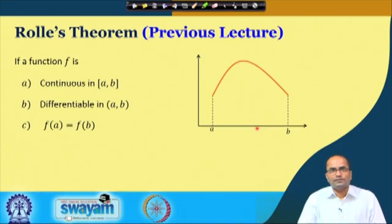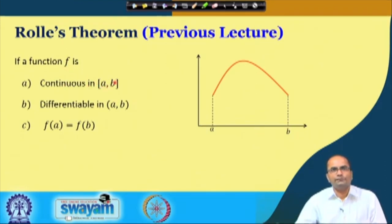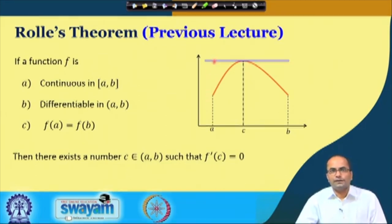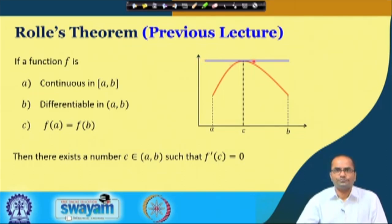Let me recall from the previous lecture. If a function is continuous in a closed interval and differentiable in an open interval, and the function values at the endpoints of the interval are equal, then there exists a number in the open interval such that the derivative vanishes at that point. The geometrical interpretation is clear: if f(a) equals f(b), there exists a point where the tangent is parallel to the x-axis.